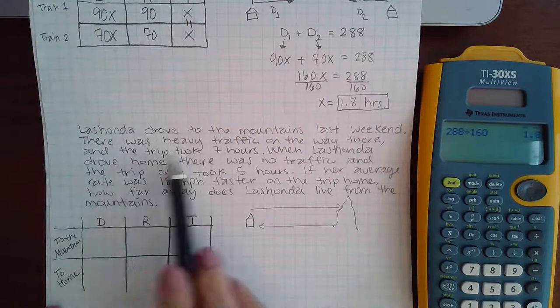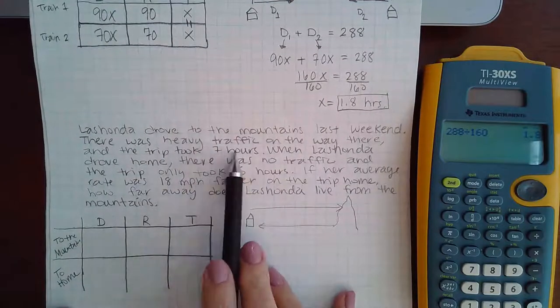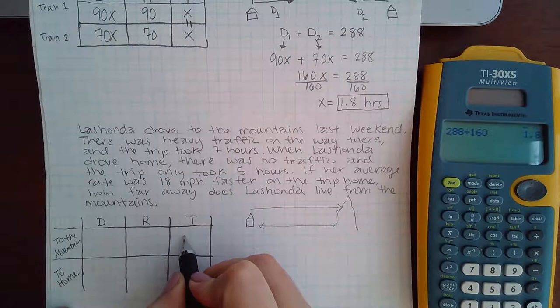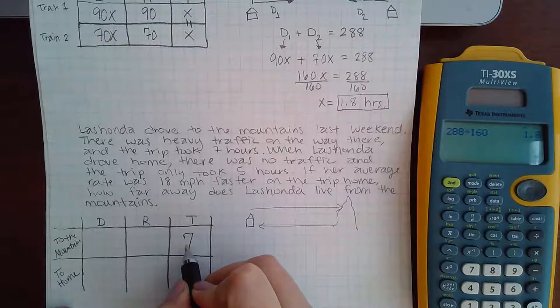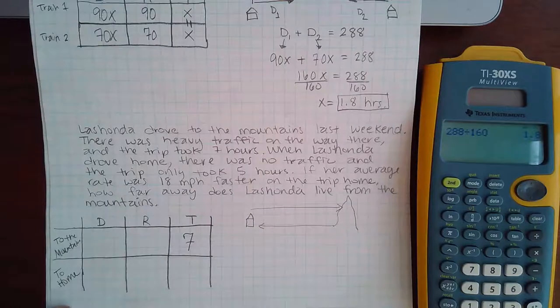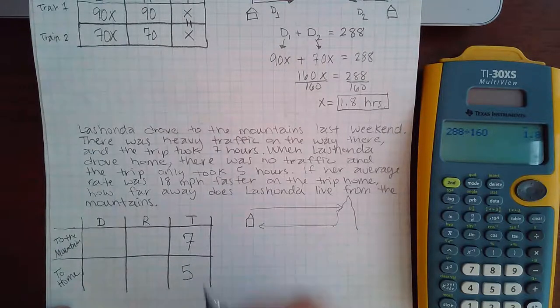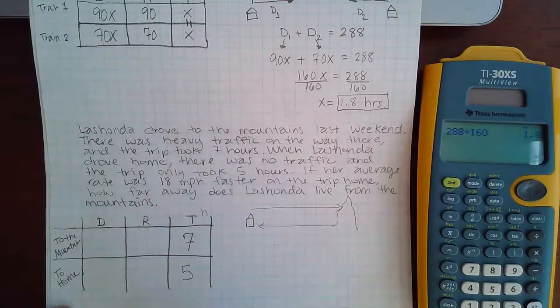Now it does tell me that there was heavy traffic on the way there, and it took her seven hours. So I do know that the time is seven hours for the trip there. And on the trip back home, there was no traffic, so it only took her five hours. So I do know that this is in hours.